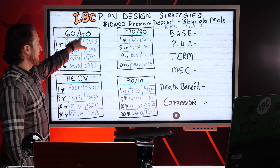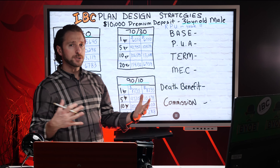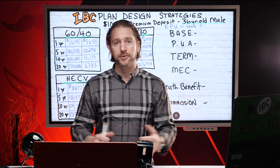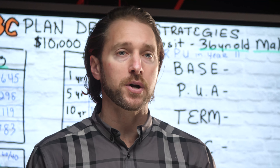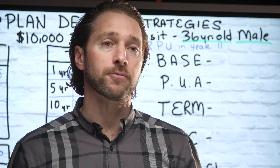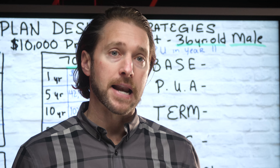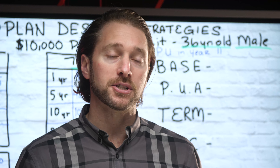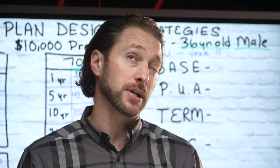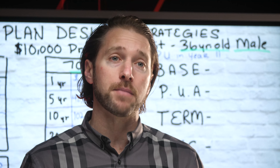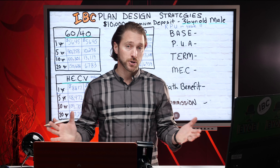Let's use the first design: a 60-40. This is probably the standard in the industry for the infinite banking concept. This is what Nelson Nash used for making all of his policies. Out of my nine policies, eight of them are designed as a 60-40. So if we're putting $10,000 in, in a 60-40, that would mean $4,000 goes to the base representing 40%.